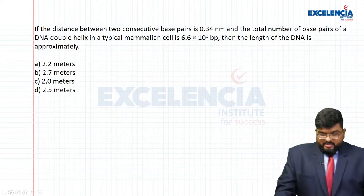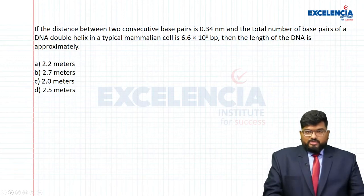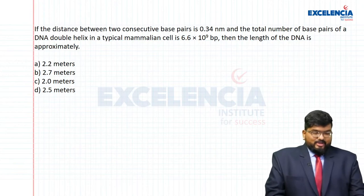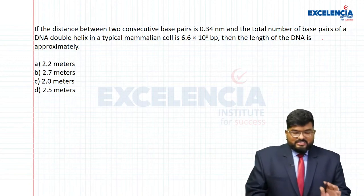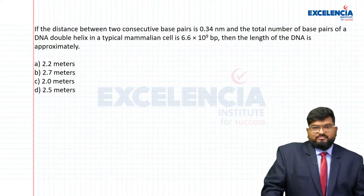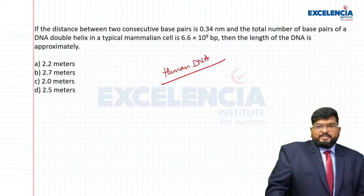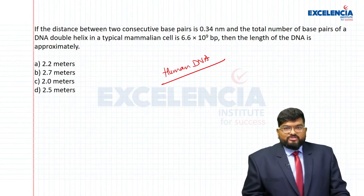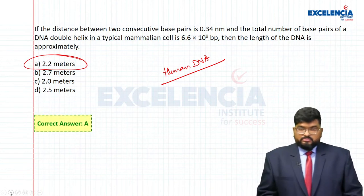If the distance between two consecutive base pairs is 0.34 nanometers and the total number of base pairs of a DNA double helix in a typical mammalian cell is 6.6 × 10⁹ base pairs, then the length of the DNA is approximately 2.2 meters. These are characteristics of human DNA obtained from the Human Genome Project.